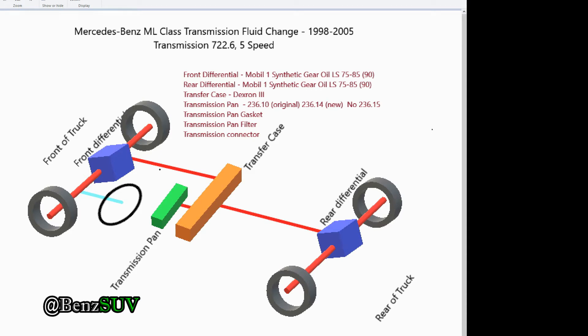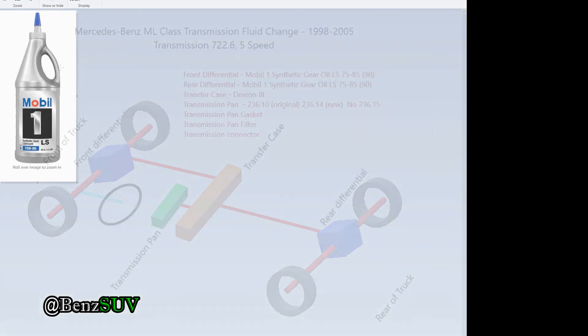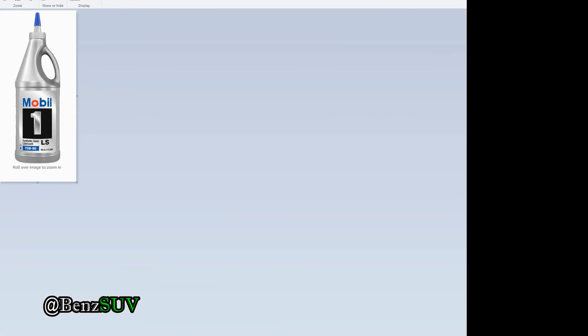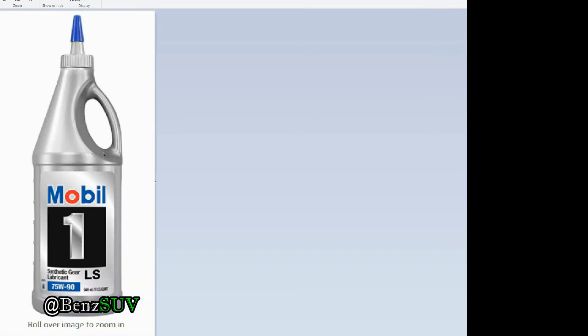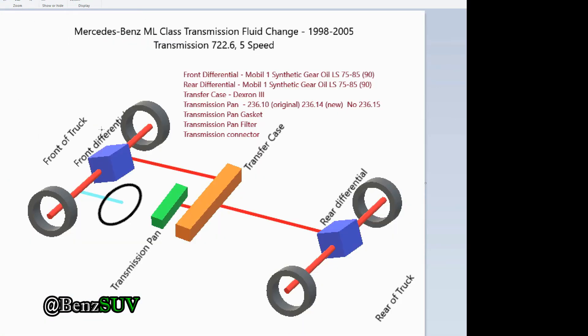I will talk about going from front to the back as to what it is and what we need to change. In the front, we have the differential, and the front differential is Model 1 synthetic gear oil LS75-285. It's what's recommended, but you can go 75 to 90, and the oil that I put in, this is the gear oil 75W-90, and it's all synthetic. That's for the front differential.